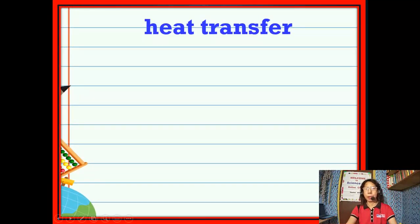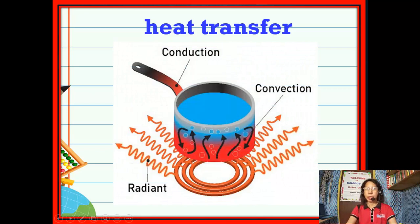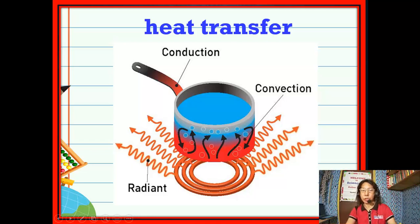Now we discuss heat transfer. Take a look at the picture — there are three types shown. The heat from the burner transfers to a solid material; this is what we call conduction. The heat from the burner also transfers through the liquid inside; this is convection. And the last one is radiation — the heat from the burner goes out to the air or to the surroundings.